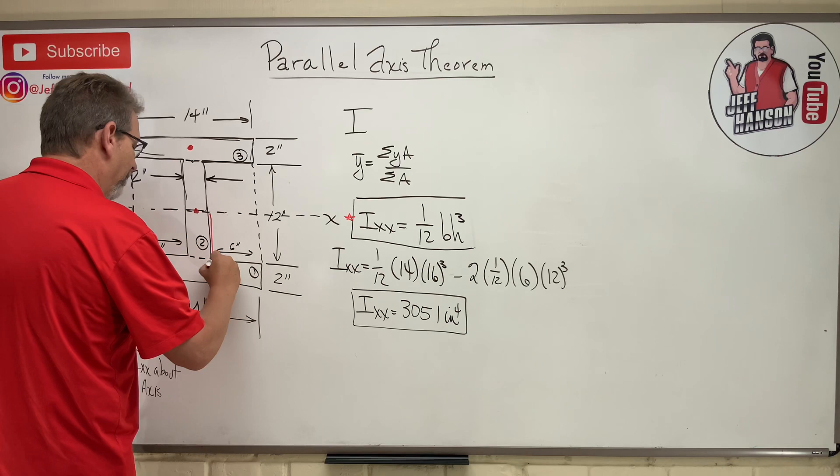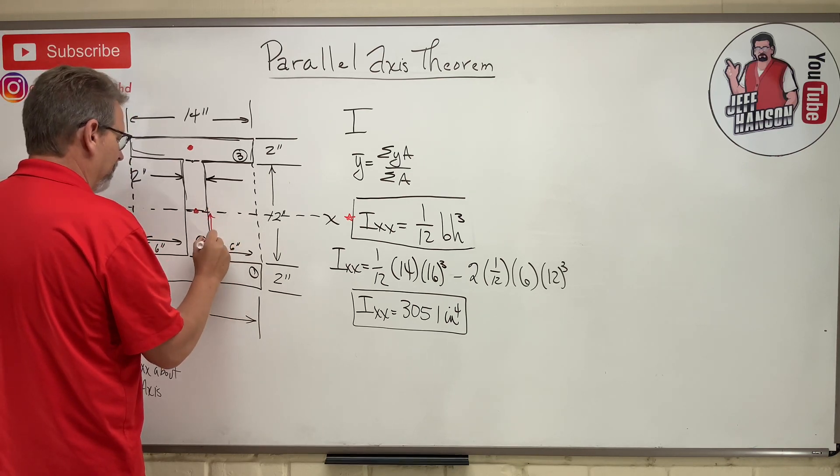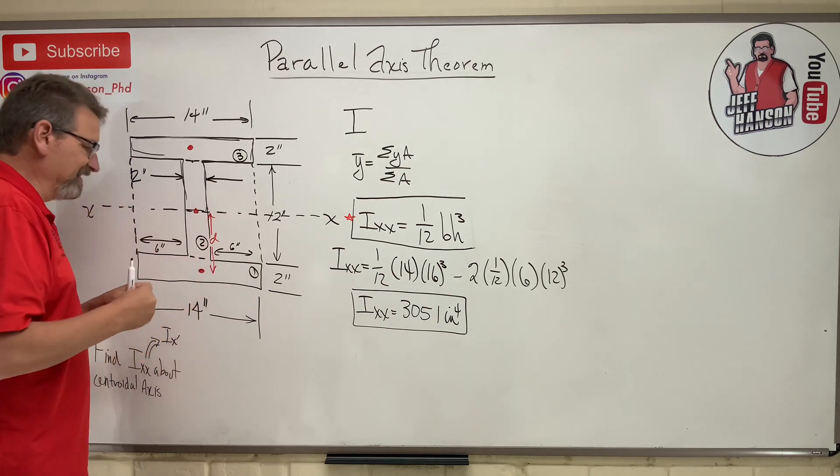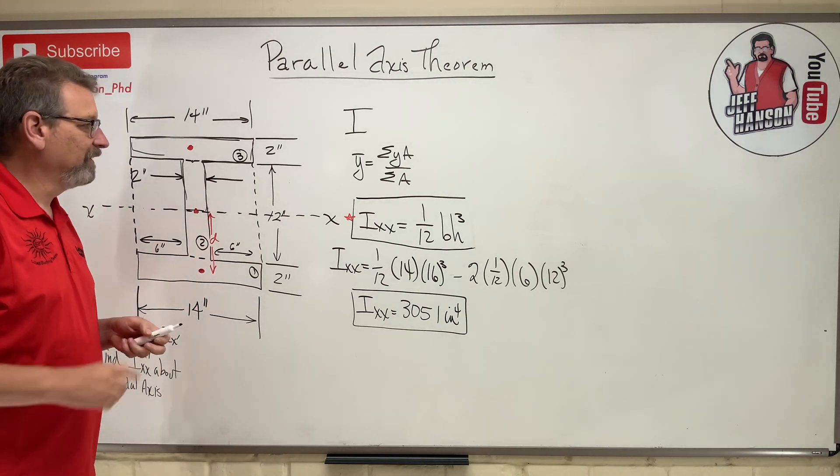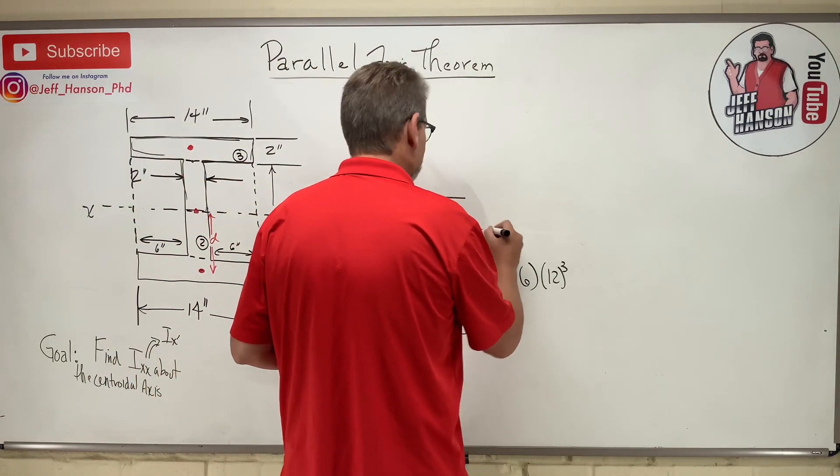So I need a way to transform this centroid from down here to up there, and what we do that with is the parallel axis theorem. So we're going to move it that much right there, because you know what? You've got to move it, move it. Some little distance, d, to transform it. And we do that with this equation. The parallel axis theorem goes like this.